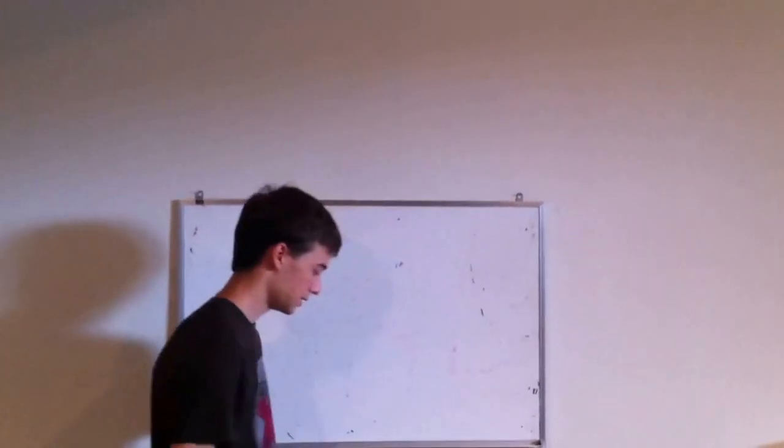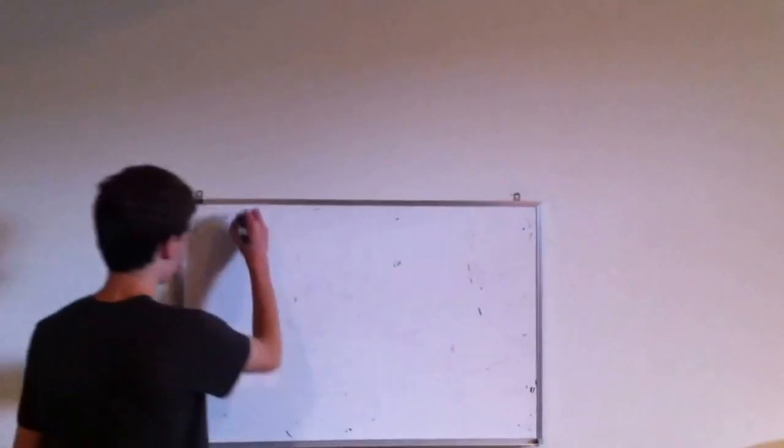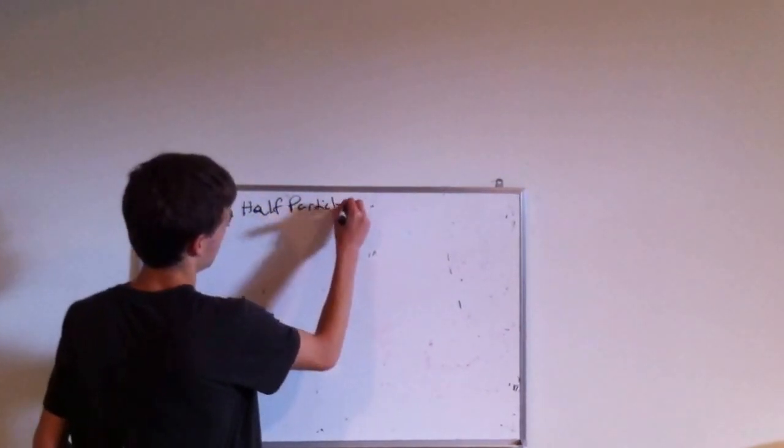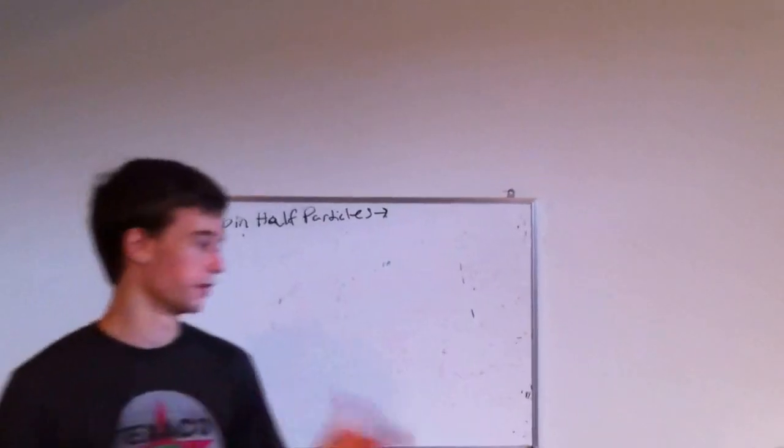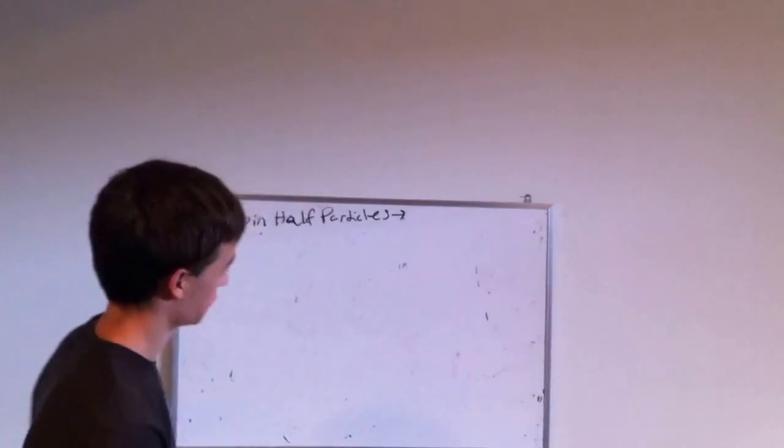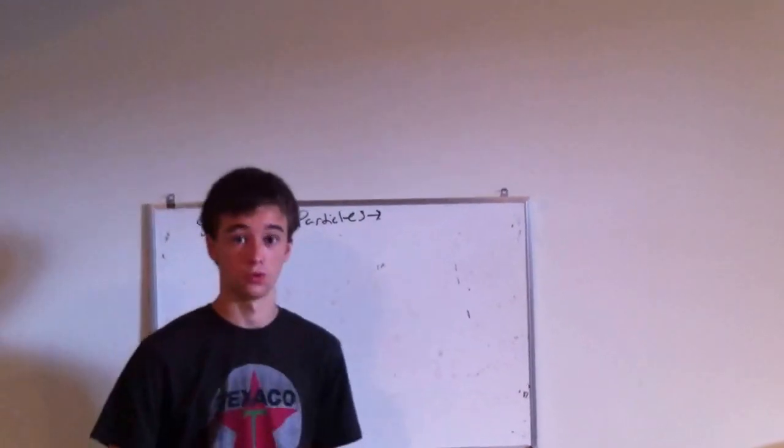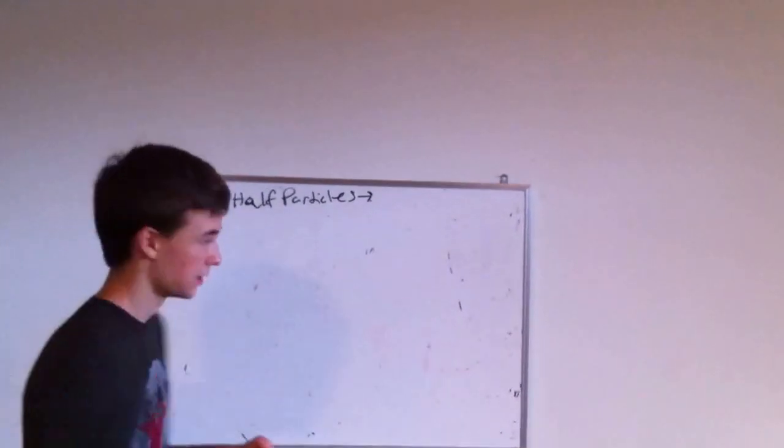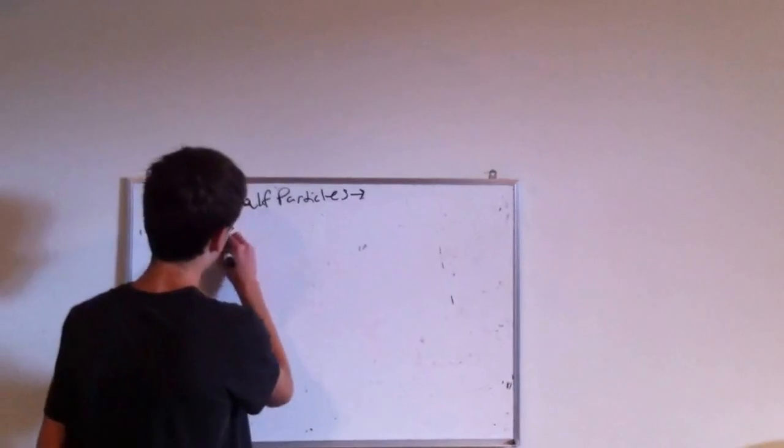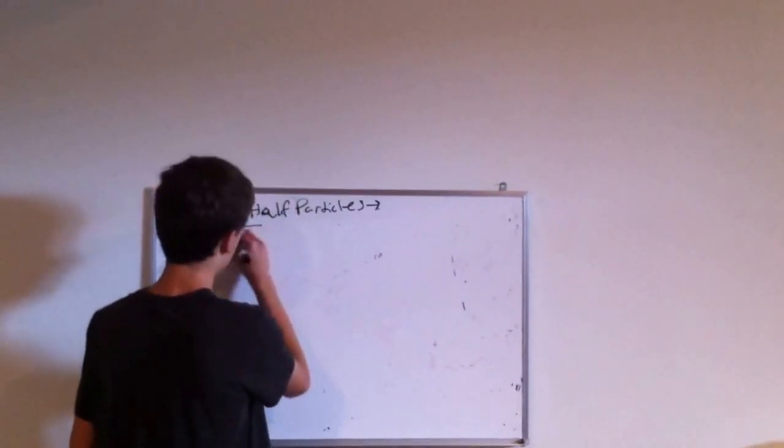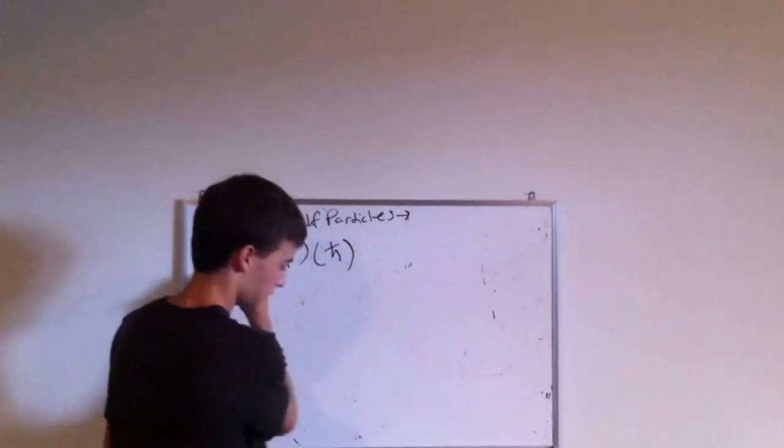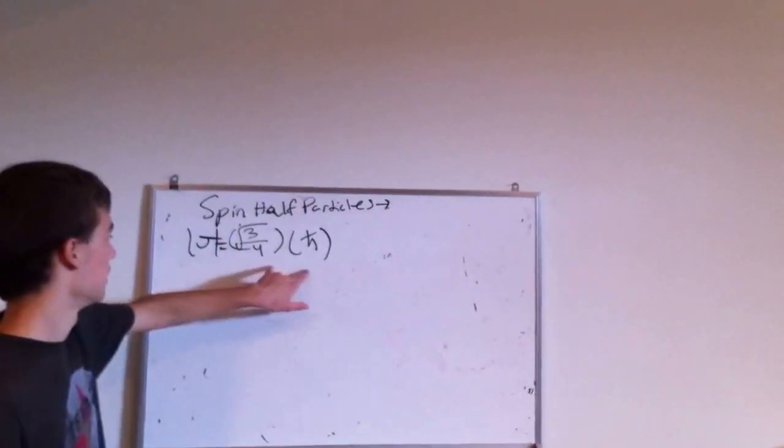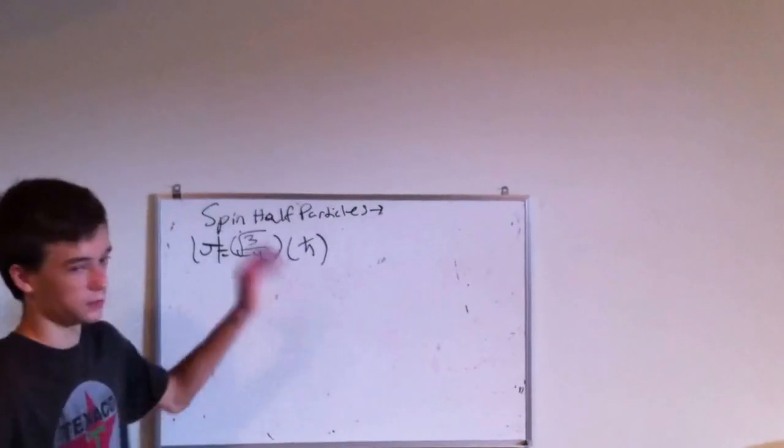Okay, so I guess the only other thing I need to talk about is spin half particles. All the particles that we know that make up the nucleus, or so, electrons, protons, quarks, which make up protons and neutrons, all of them are what we call spin half particles. Now what does this mean? That means that their angular momentum, their amount of spin is equal to the square root of three over four times h-bar. Now h-bar is just h-bar equals h over two pi.